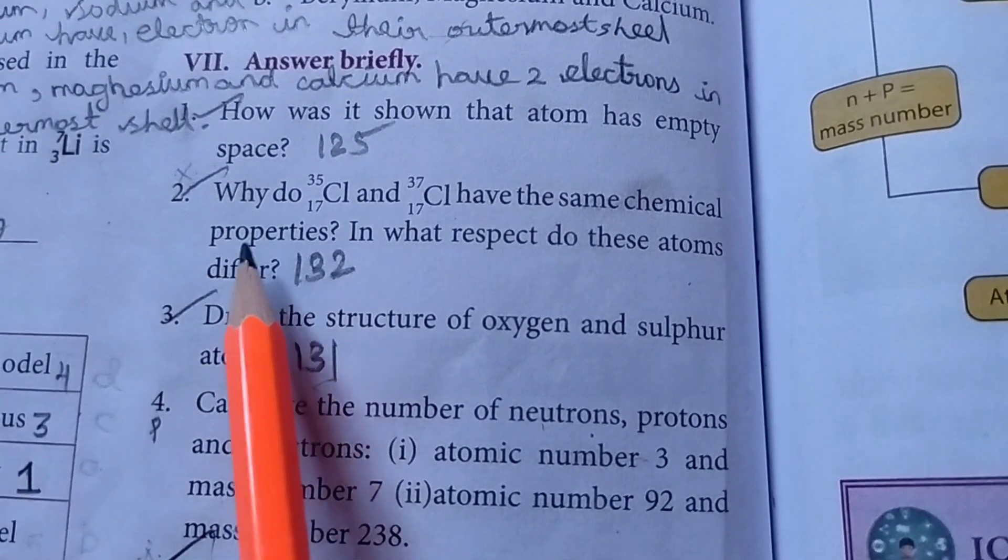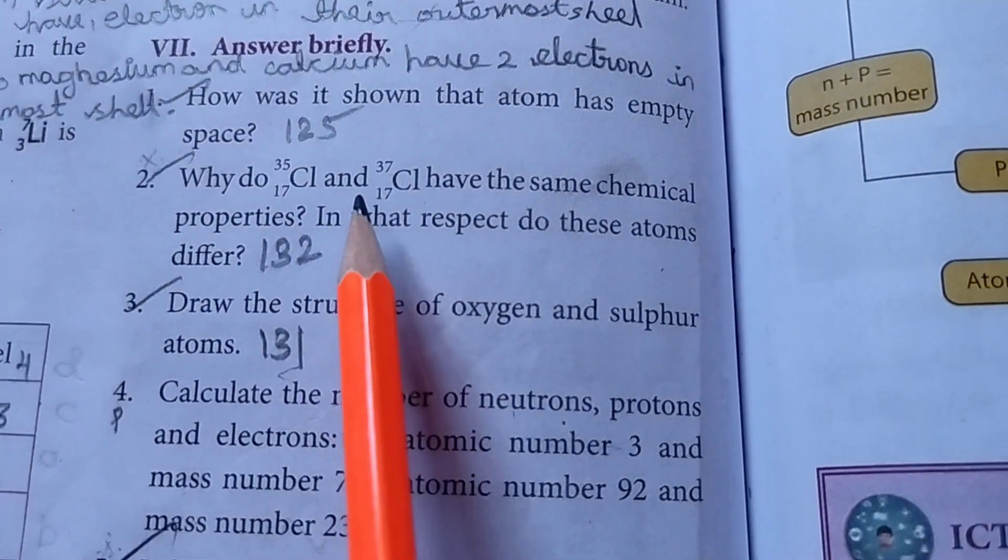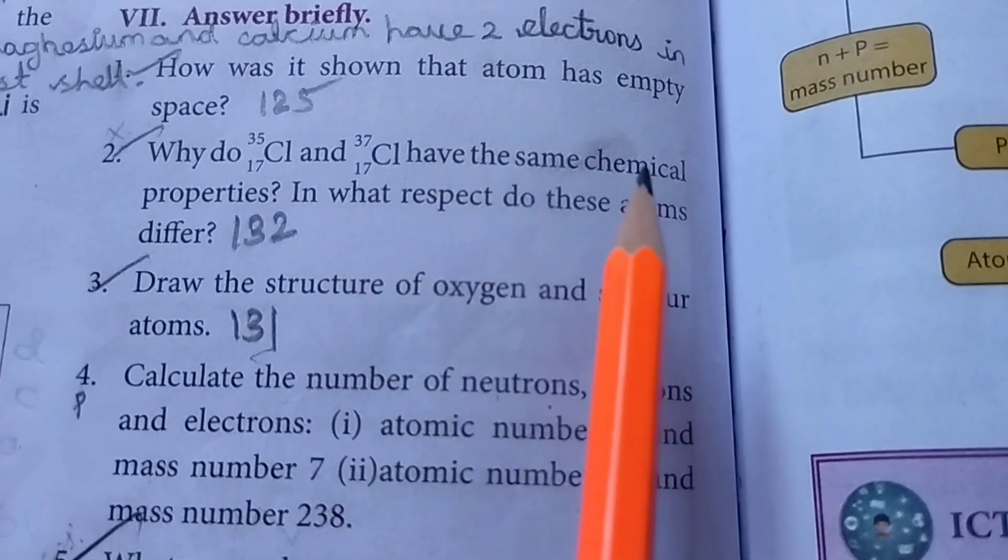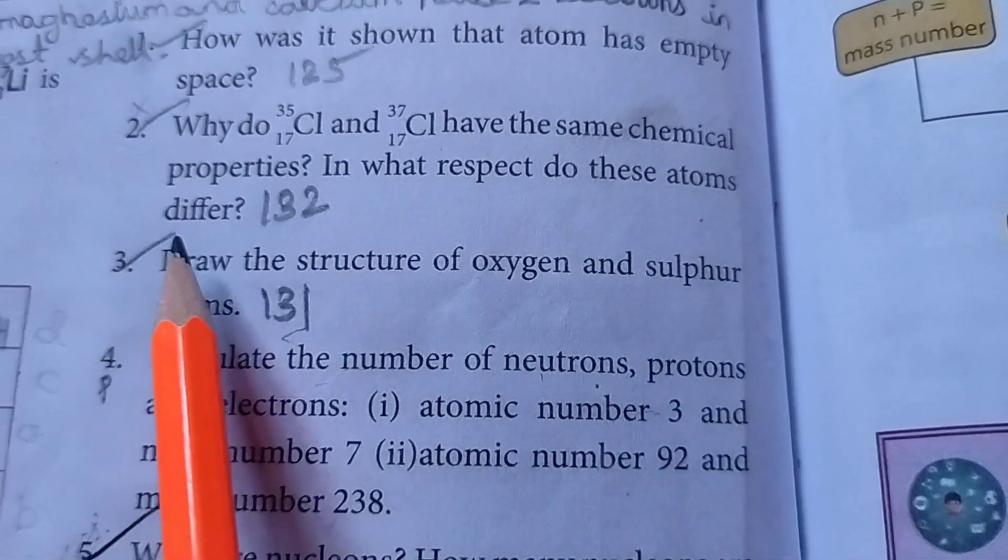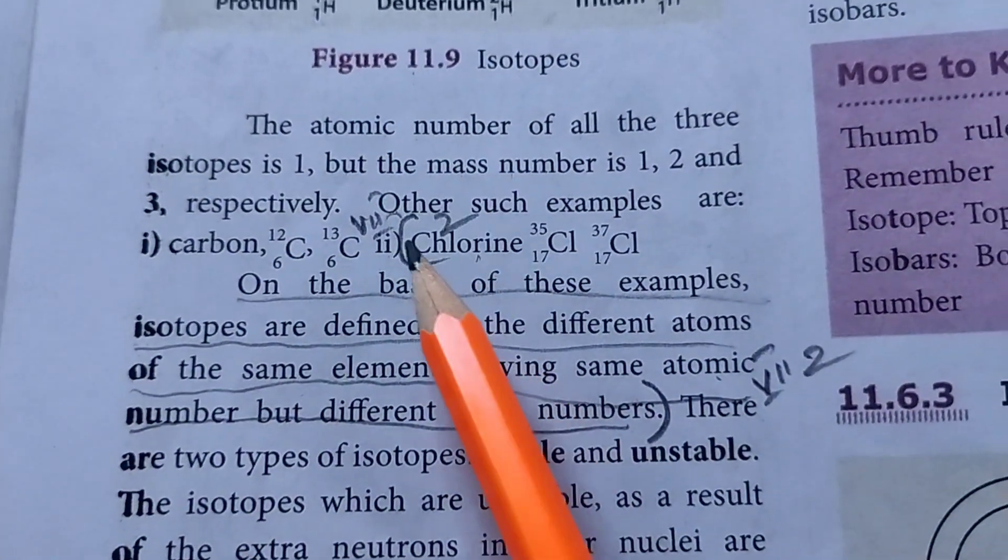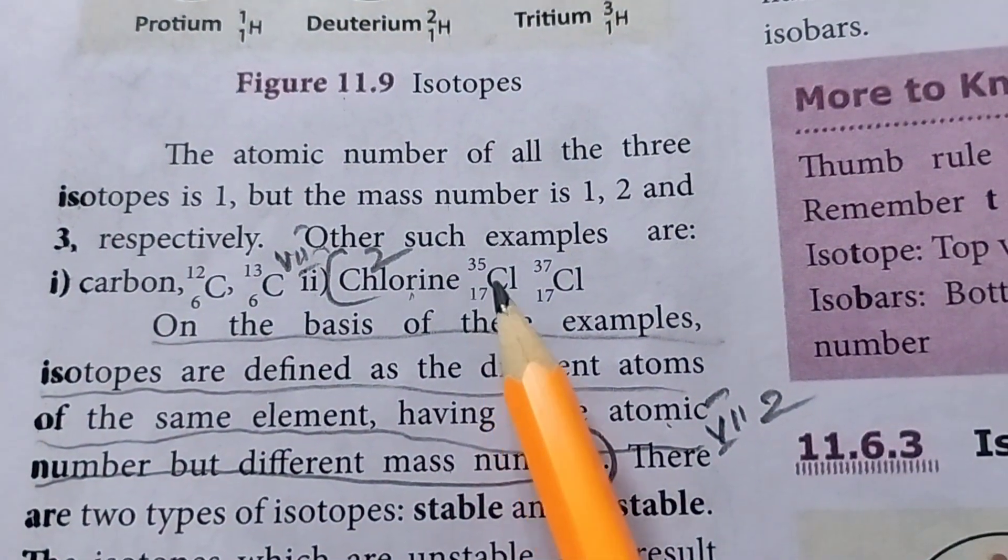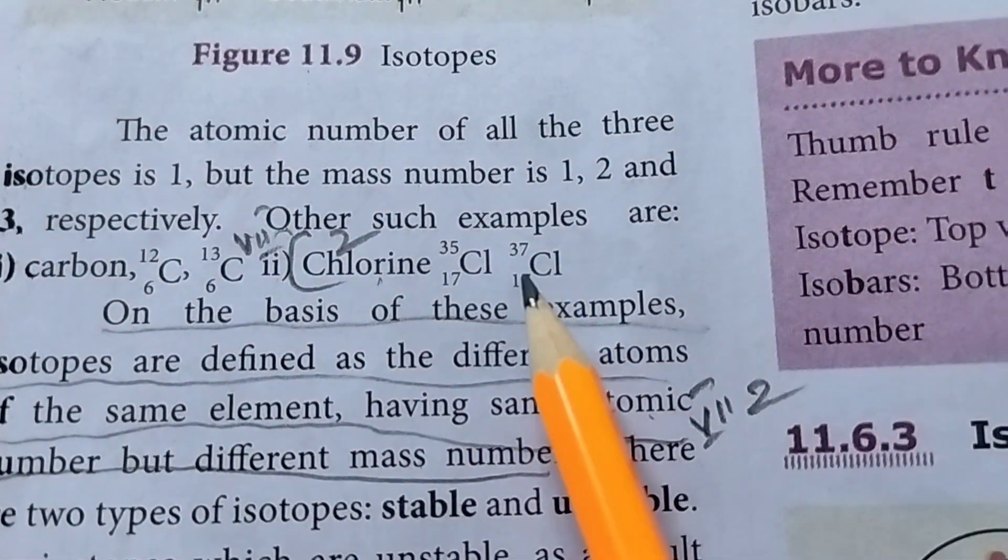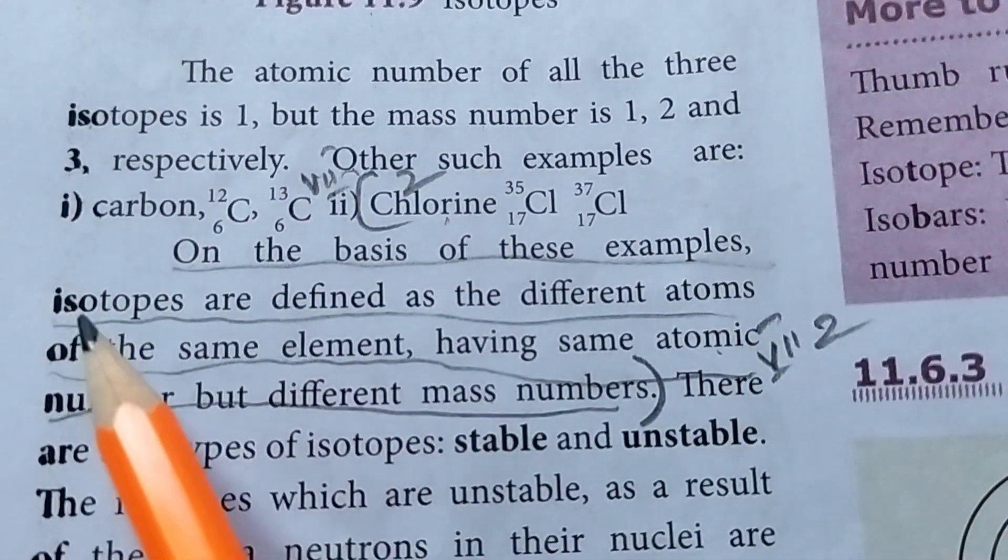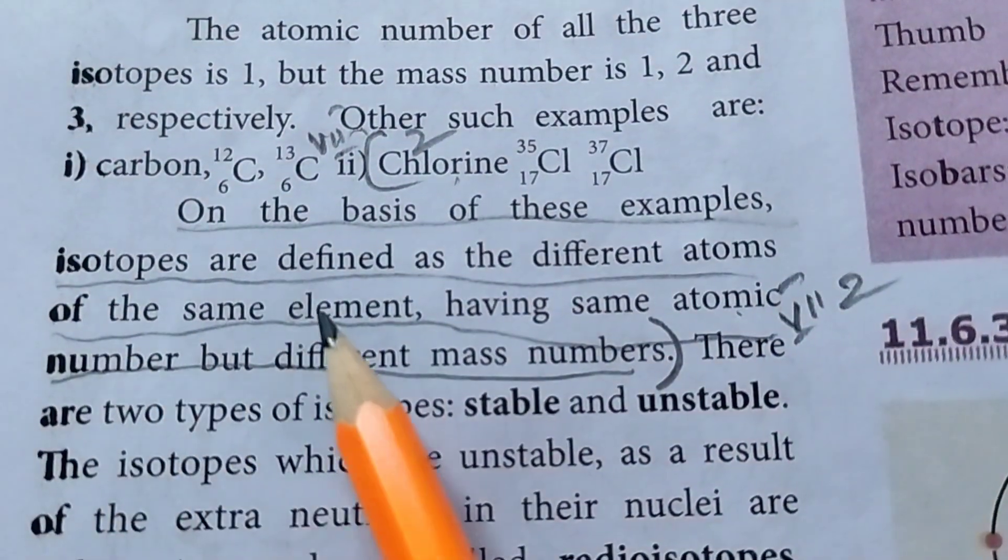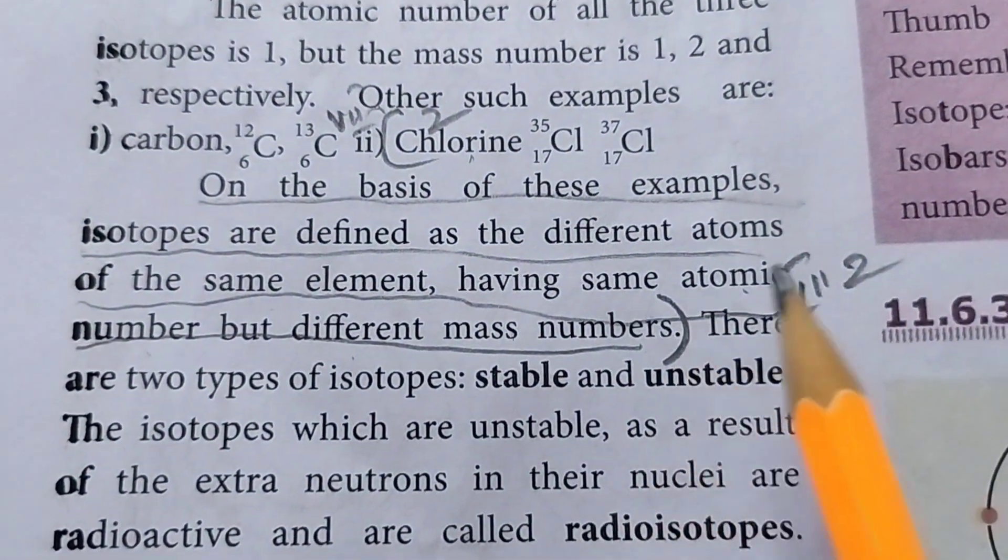Then second question. Why do Cl atomic number 17, mass number 35 and mass Cl atomic number 17, mass number 37 have the same chemical properties. In what respect do these atoms differ? Take page number 132. The isotopes, second paragraph, last. Chlorine. Then atomic number 17, this is Cl. Then mass number 35. Cl atomic number 17, mass number 37. On the basis of these examples, isotopes are defined as the different atoms of the same element. Having same atomic number but different mass numbers. This is the seventh row of the second question answer.